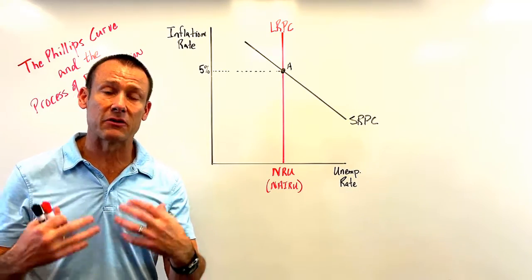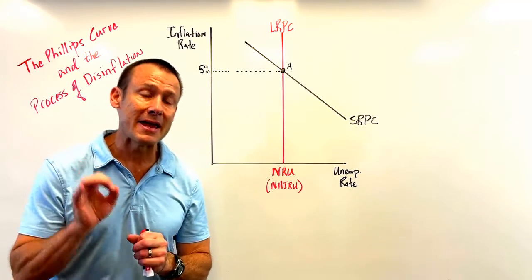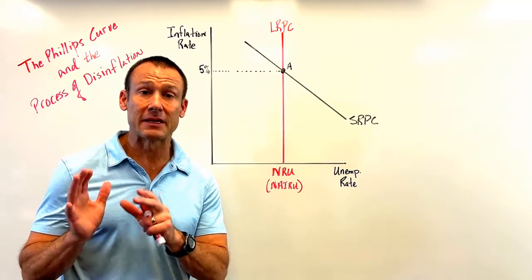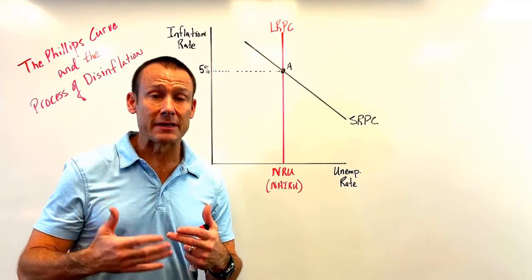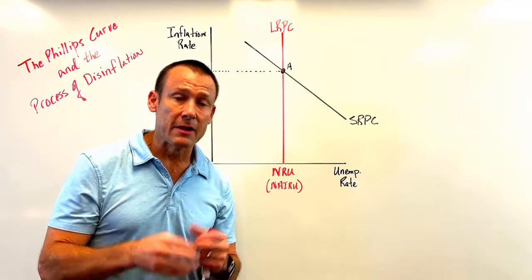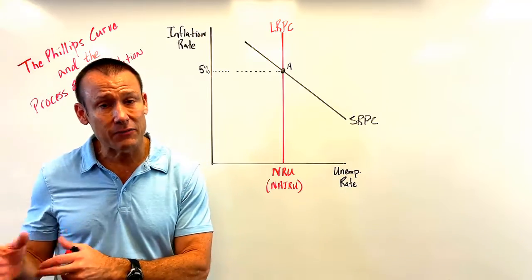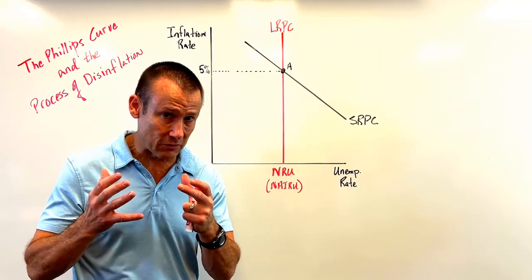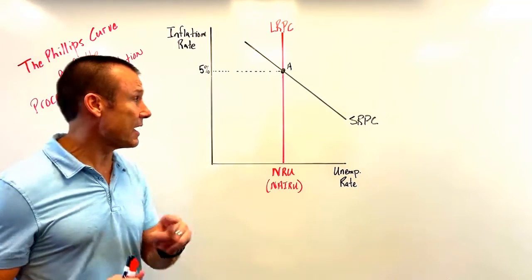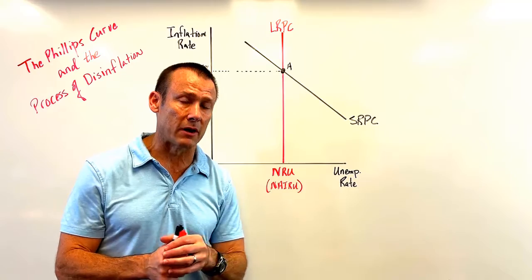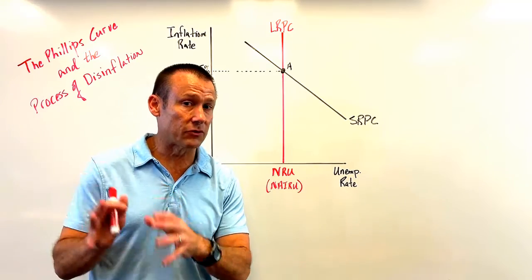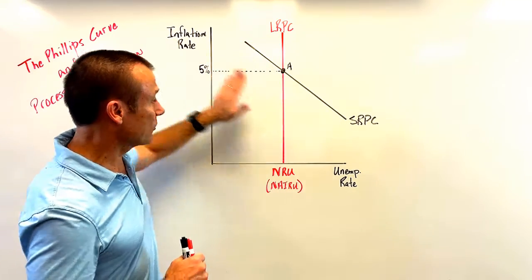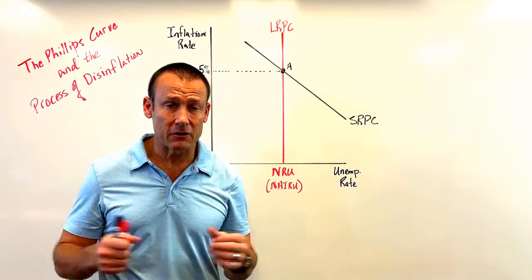Think about it this way: when the AD curve shifts along the short-run aggregate supply curve to the right, the inflation rate tends to go up and the unemployment rate heads down. If that AD curve shifts to the left, the unemployment rate goes up and the inflation rate goes down — that's the inverse relationship in the short run. But in the long run, there is no relationship between the inflation rate and the unemployment rate.